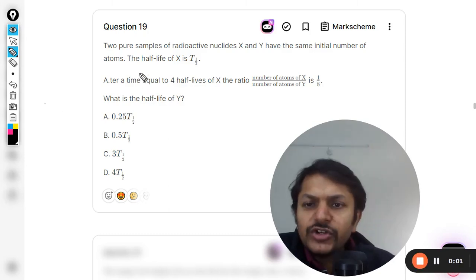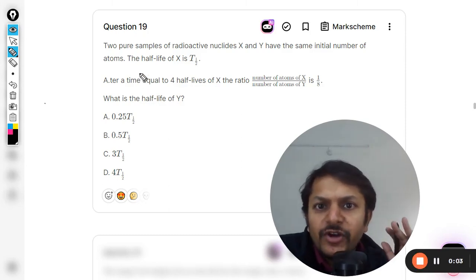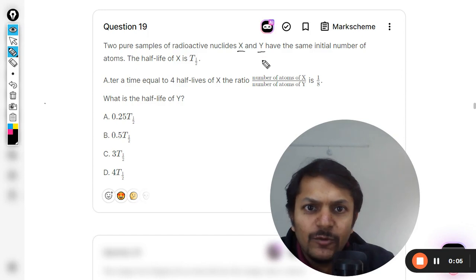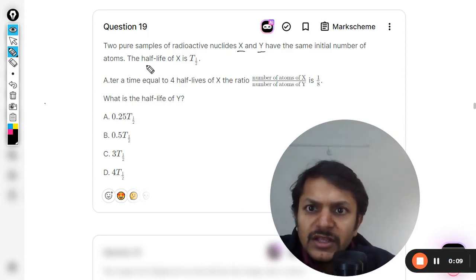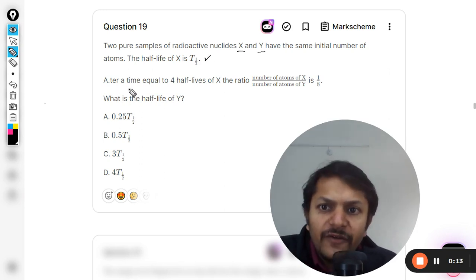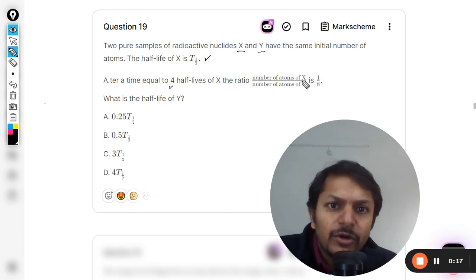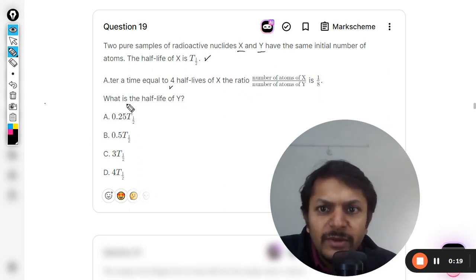Students, let us see what is there in this question. Two pure samples of radioactive nuclides X and Y have the same initial number of atoms. The half-life of X is t-half. After a time equal to four half-lives of X, the ratio of number of atoms of X and number of Y is one by eight. What is the half-life of Y?